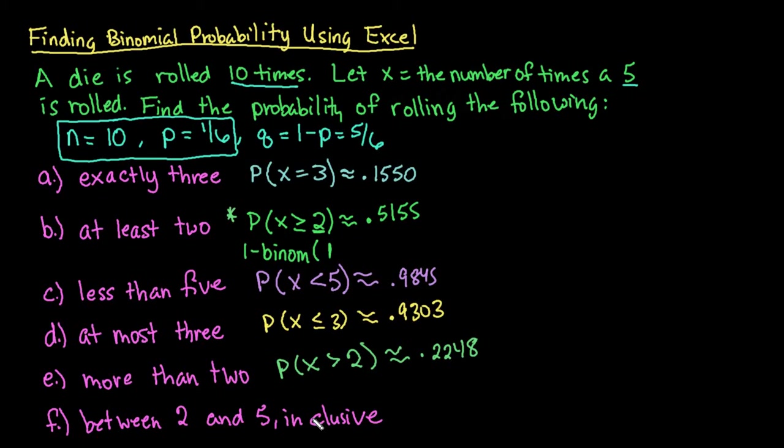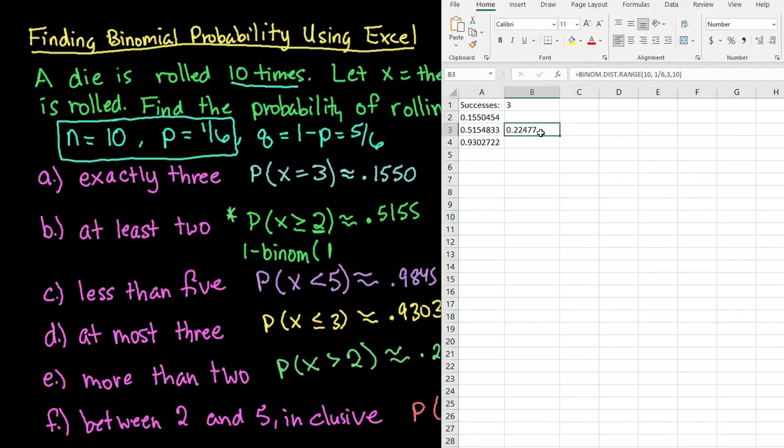And then for between with inclusive, that means that it includes both of the end points. This would be the probability that my X is greater than or equal to 2 but less than or equal to 5. So for this one, I would definitely use the same formula that we did here, the binomial distribution dot range. And from this, we want to start at 2 because it is inclusive. That means it includes the value. And we want to stop at 5. So I can use 2 to 5 and the 0.5131 would be my answer.